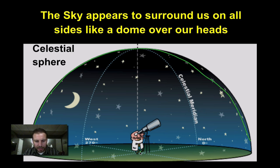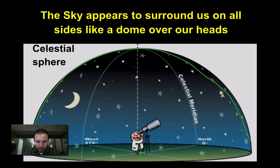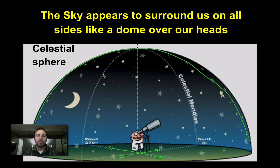There are a couple of components. You can see that the observer always stands in the middle of their celestial sphere, and we have our directions down at the bottom — we can see north, south, east, and west. All the stars and everything up here appear two-dimensionally to be surrounding us.